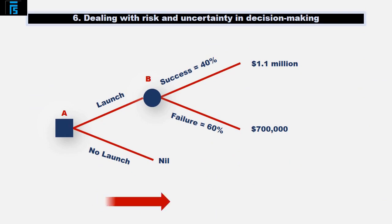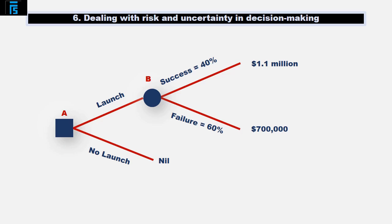Decision trees are drawn and read from left to right. A square node means a decision needs to be made. The decision maker can choose which route to go down from that node — in other words, Jack can decide whether to launch or not.